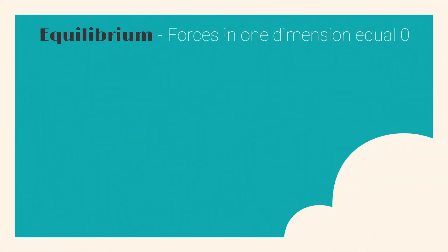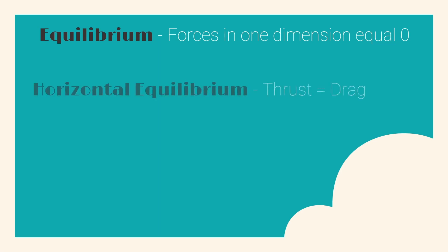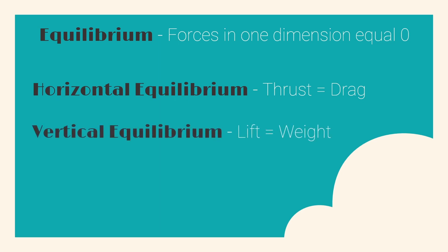When talking about these four forces, equilibrium is often also brought up. An aircraft is in equilibrium when all forces in one dimension are equal. So for example, when the aircraft's thrust is equal to its drag, then it is in horizontal equilibrium. When the aircraft's lift is equal to its weight, then it is in vertical equilibrium.